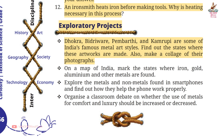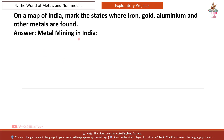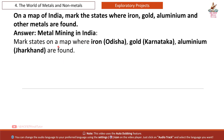Exploratory Project 2: On a map of India, mark the states where iron, gold, aluminium, and other metals are found. Answer: Iron — Odisha; Gold — Karnataka; Aluminium — Jharkhand. Mark these states on India's map accordingly.